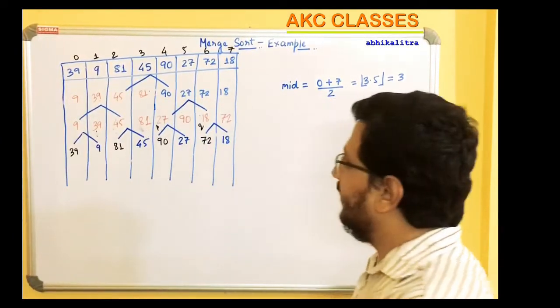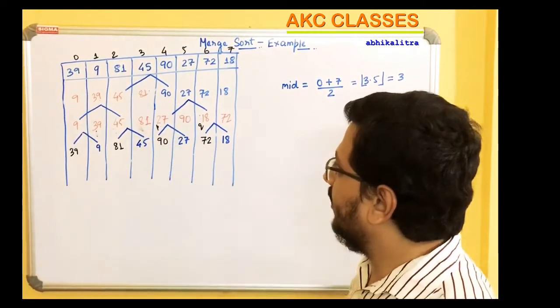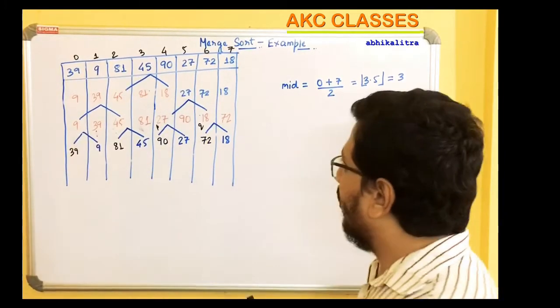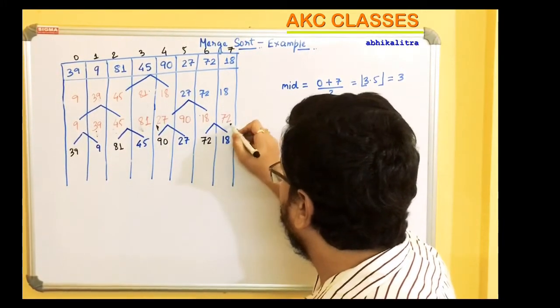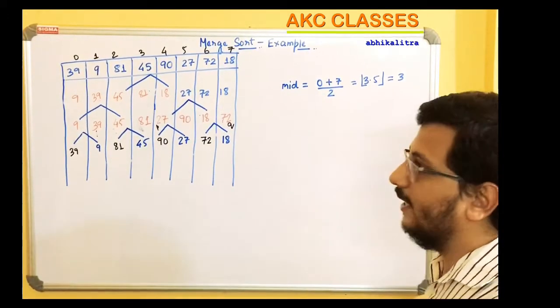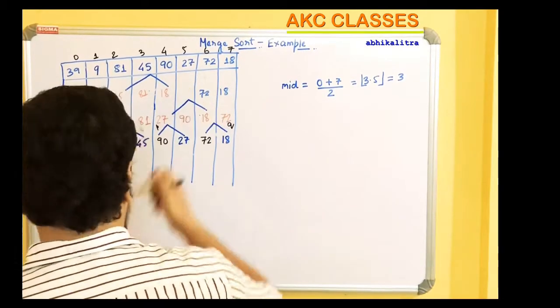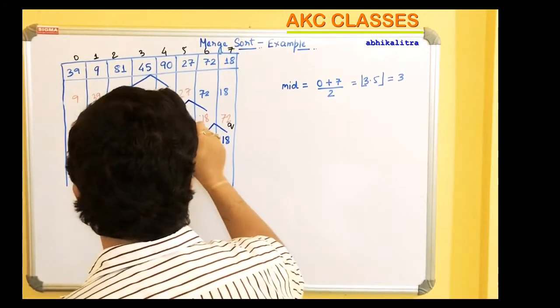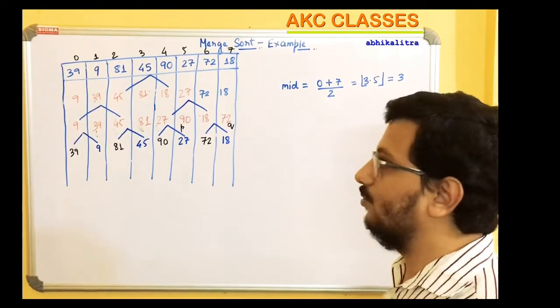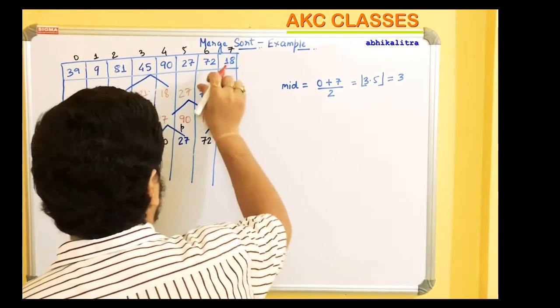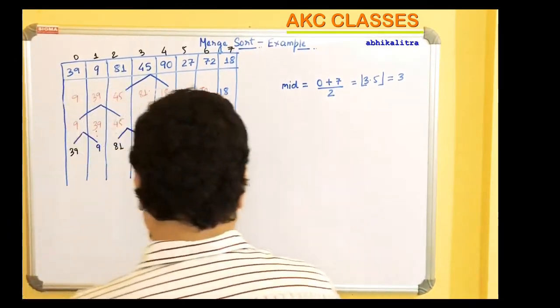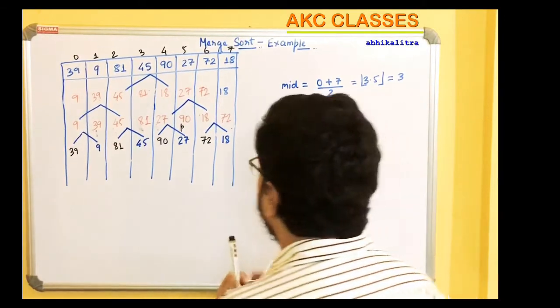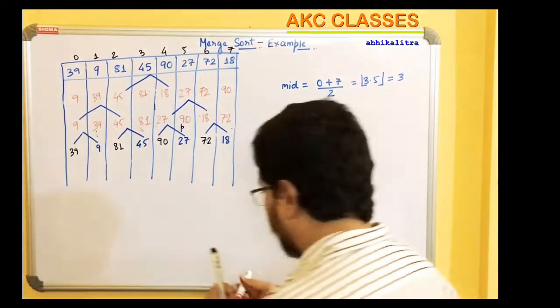We have P and Q pointers. 18 is smaller than 27, so 18 is written. Q pointer advances. 27 is compared with 72, so 27 is written. P pointer advances. 72 is compared with 90, so 72 is written. P pointer advances. Q pointer will exhaust, but you can just concatenate the remaining elements. So we add the remaining element.